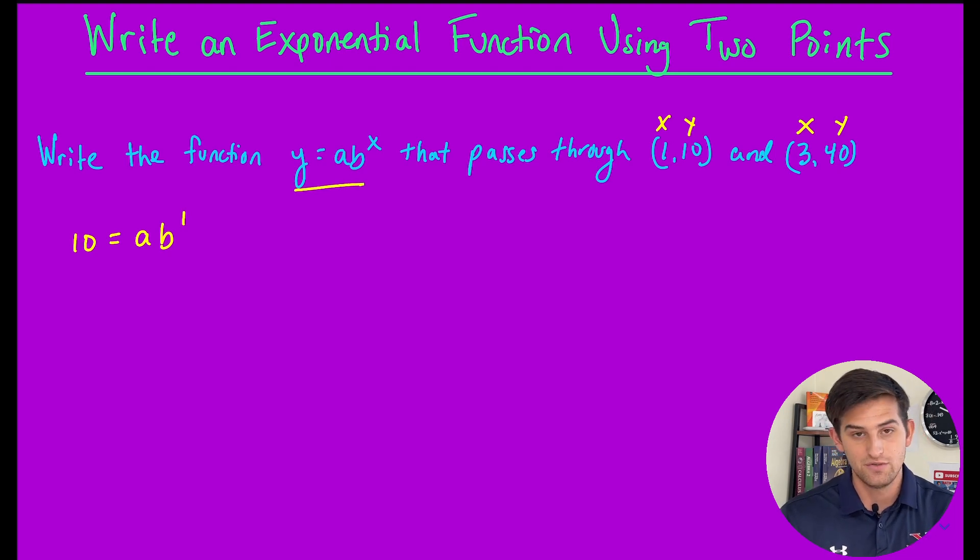Now let's write a similar equation using (3, 40). So 40 equals a times b to the third power.